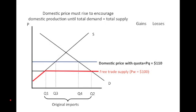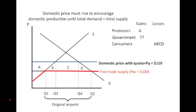Let's look at the impact on the various groups within the domestic economy. Domestic producers are going to gain area A — that's the increase in producer surplus associated with the higher price. Domestic consumers face a loss of consumer surplus equal to A + B + C + D, which is the difference in price over the demand curve. With a tariff, the government earned revenue directly through the import tax, but the impact on the government here is unclear because it depends on how the licenses for imports are allocated.